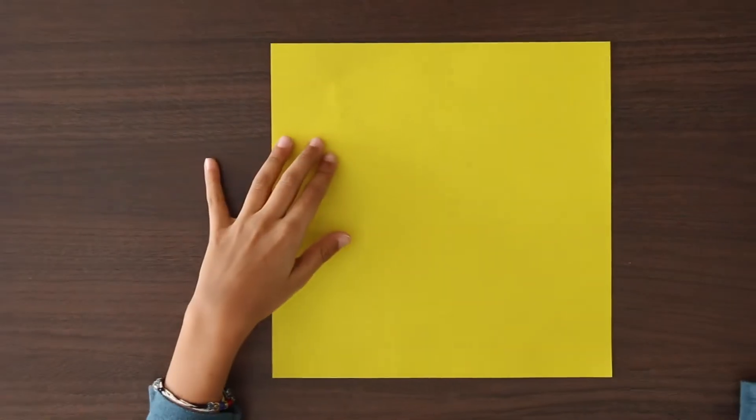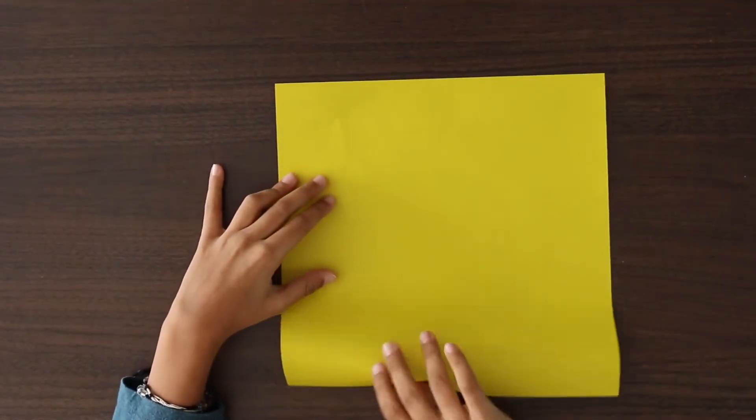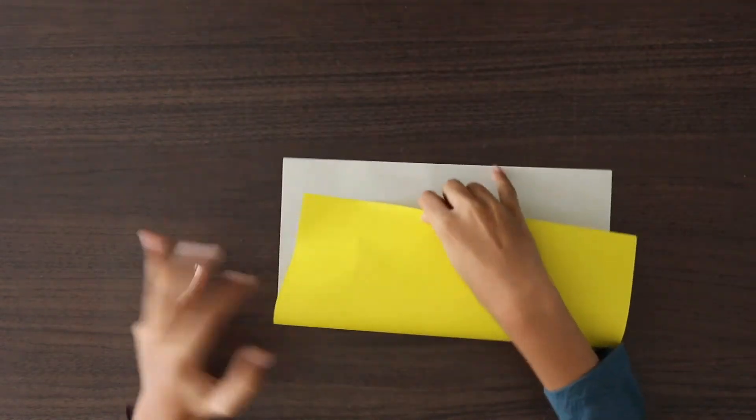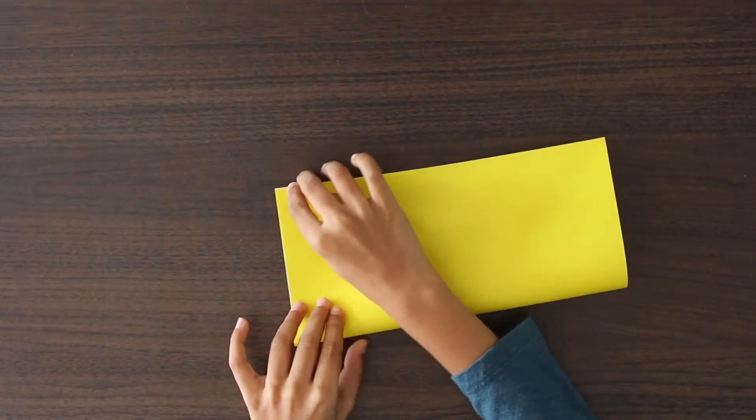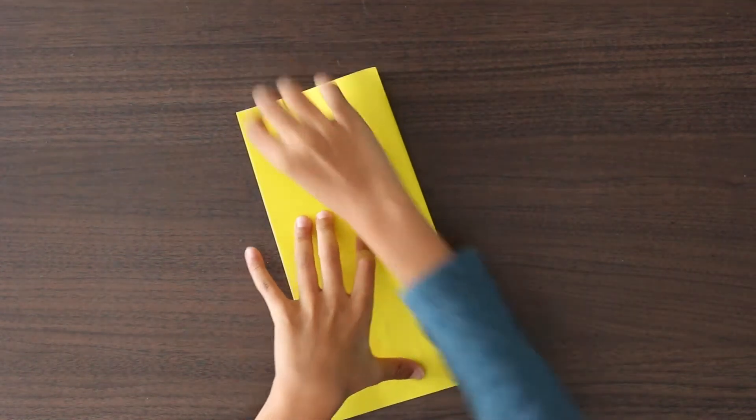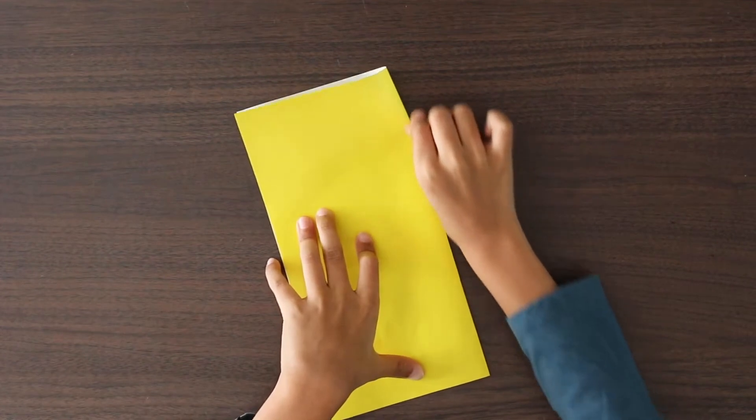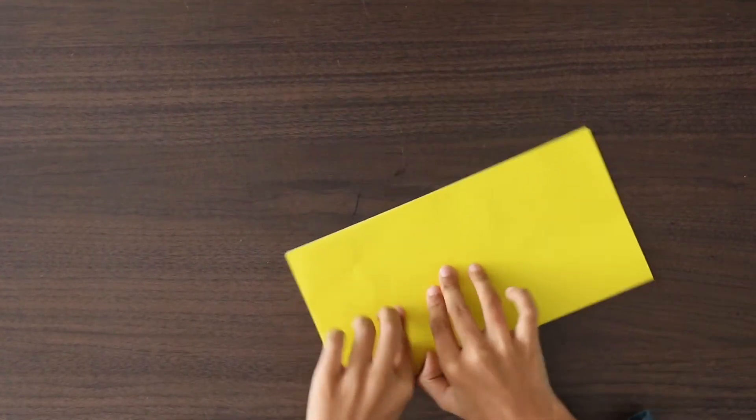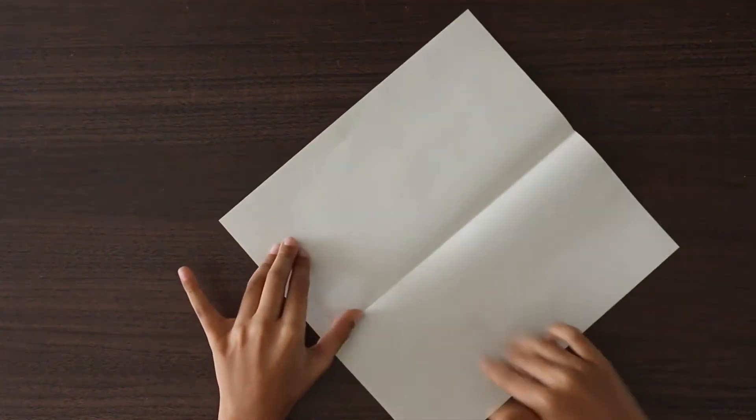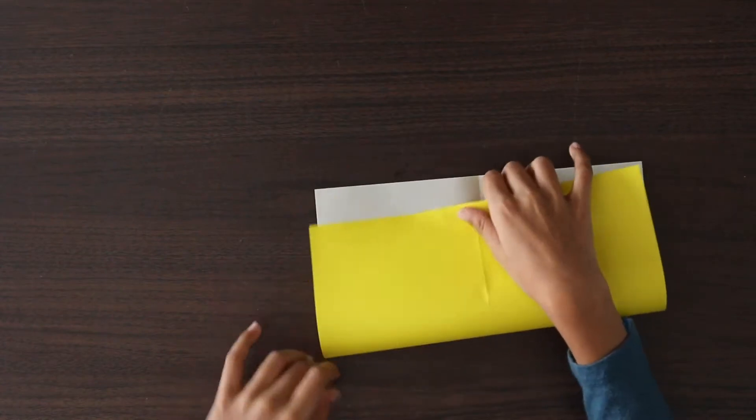So first you need a square sheet of paper. Turn it over, fold in half. Unfold, and fold in half in this direction.